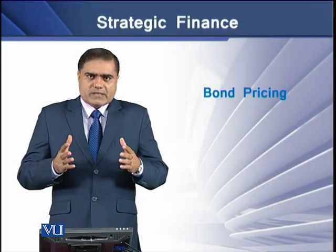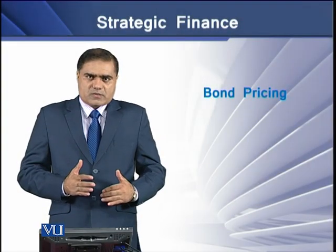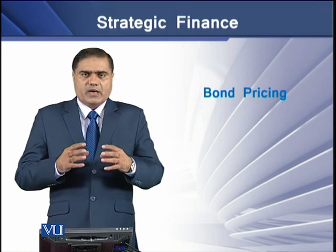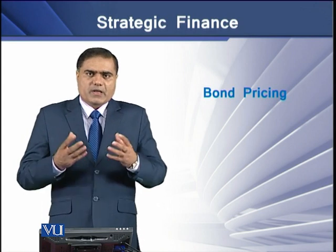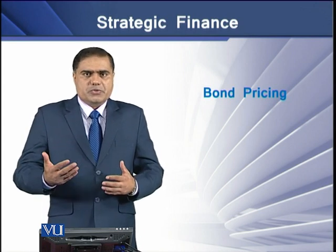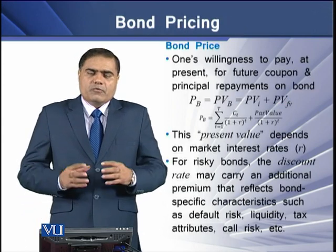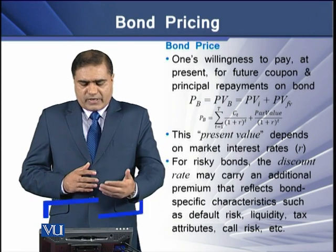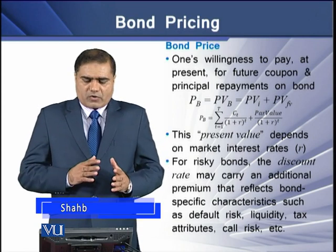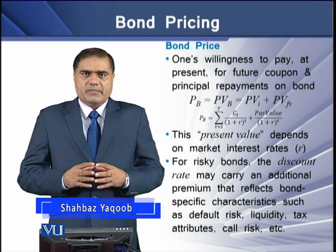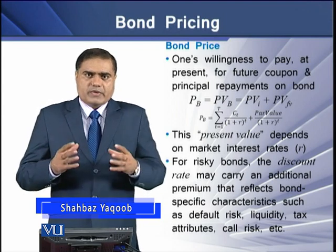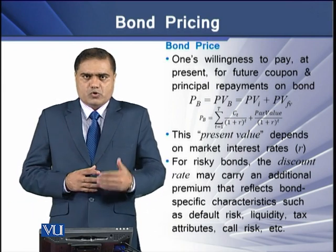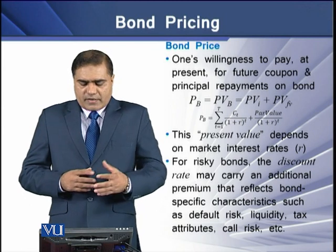A bond price is the current price of its coupons and principal repayment that occur over its entire life till its maturity. Formally, bond price is the price that one is willing to pay at present for future coupon and principal repayment on the bond. So we can say that basically the bond price is the present value of its coupons and the present value of its repayment.